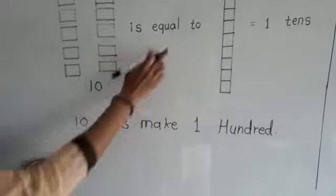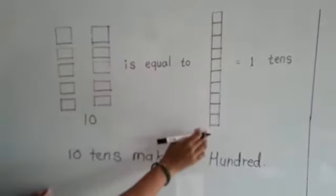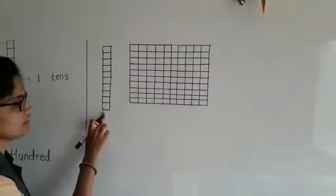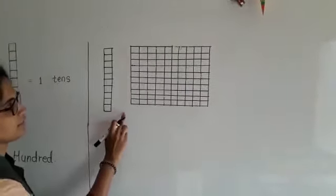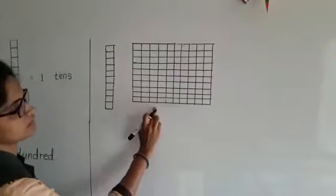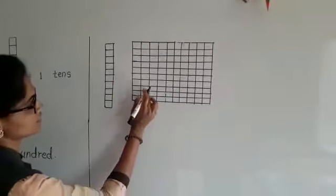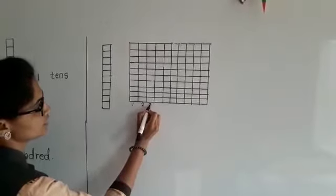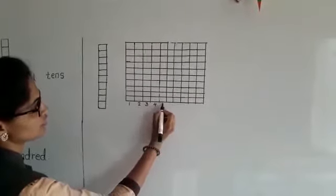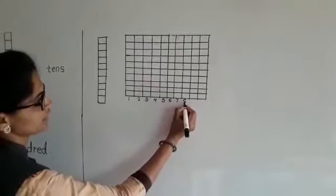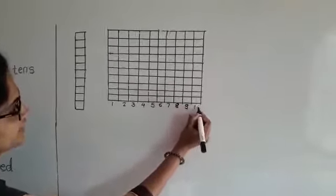See, there are ten ones. This is one ten. Similarly, there are some tens. Count this: 1, 2, 3, 4, 5, 6, 7, 8, 9, 10.